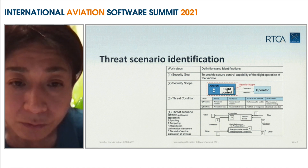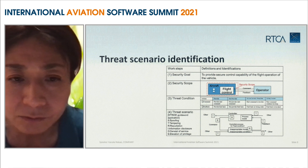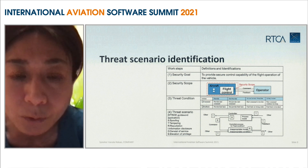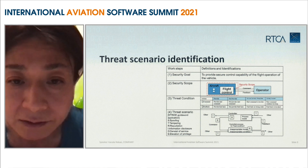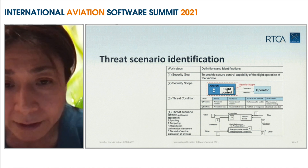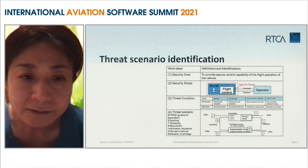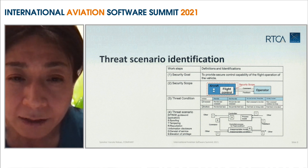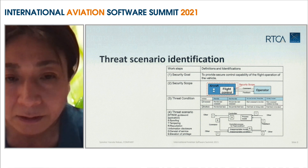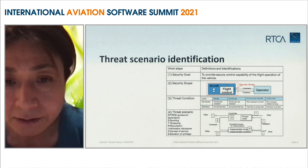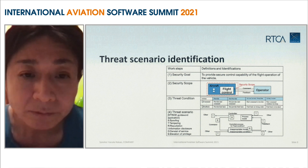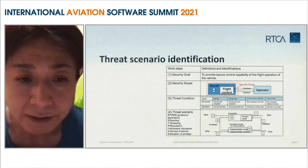Identified threat conditions include: providing a start command in an abnormal condition, not providing the start command when it is needed, the start command arriving too late, or the start command continuing too long. For the feedback: providing feedback when it is not needed, not providing feedback when it is needed, feedback continuing too long, or feedback being too short.